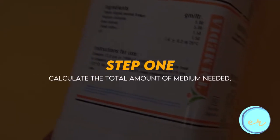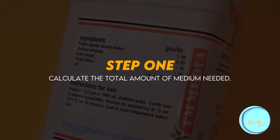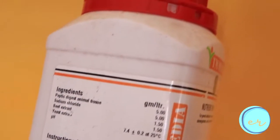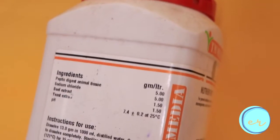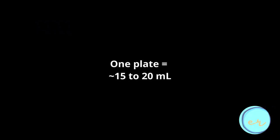First, calculate the total amount of medium you needed. Instructions can usually be found in the bottle of the medium being prepared. For reference, approximately 15 to 20 ml of dissolved powder is required to make one plate of culture medium.